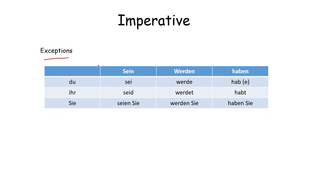An exception, there are three verbs that normally come with the exception in Imperative, like sein. Instead of based we are doing sei, seid and Sie. Werden, werde, werdet, Sie. Haben, hab, habt and Sie.